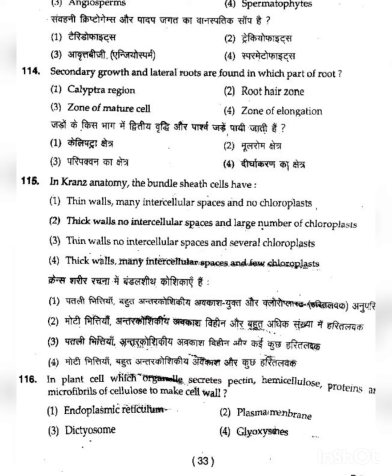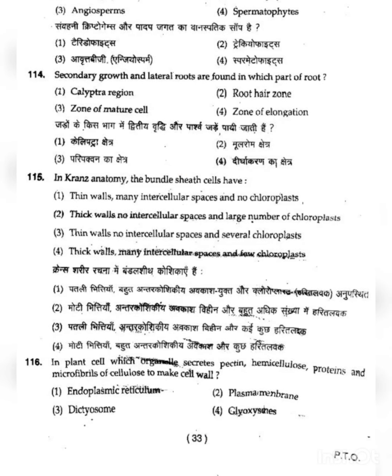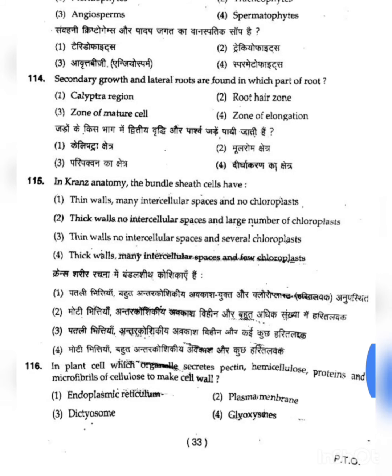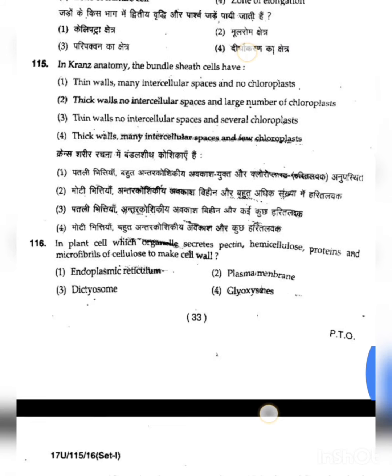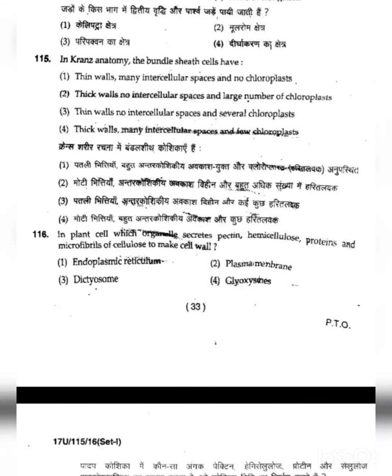Question 115: In Kranz anatomy, the bundle sheath cells have — the features are: thick walls, no intercellular spaces, and chloroplasts present in large numbers. This matches option 2: thick walls, no intercellular spaces, and a large number of chloroplasts. This is the correct answer for question 115.